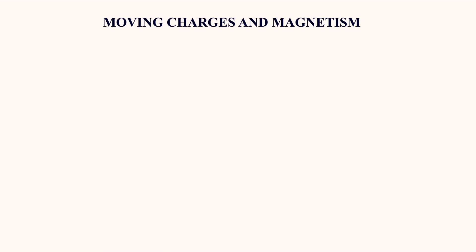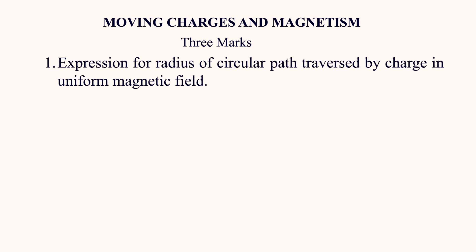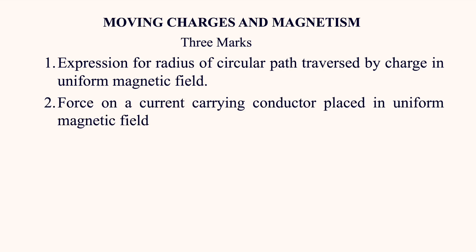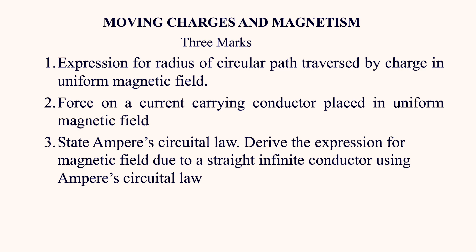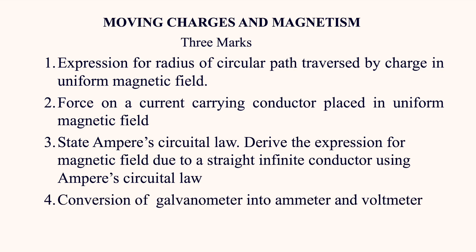Moving Charges and Magnetism — three-marks questions: derive the expression for radius of circular path traversed by a charge in a uniform magnetic field. Force on a current-carrying conductor placed in a uniform magnetic field: F = BIL sinθ — derive that equation. State Ampere's circuital law and derive the expression for magnetic field due to a straight infinite conductor using Ampere's law, giving B = μ₀I / 2πr. Conversion of galvanometer into ammeter and galvanometer into voltmeter — both important for three marks. State and explain Biot-Savart law.